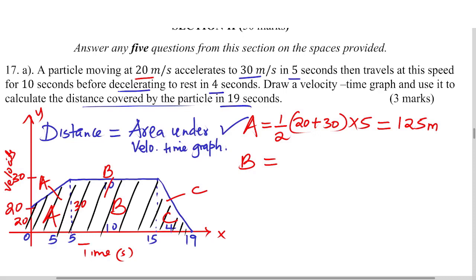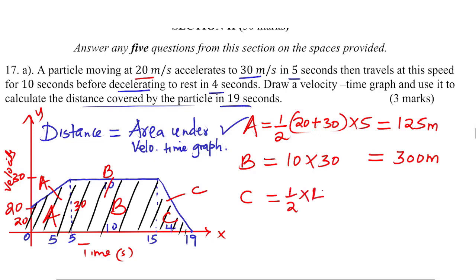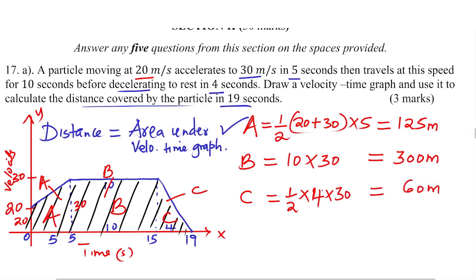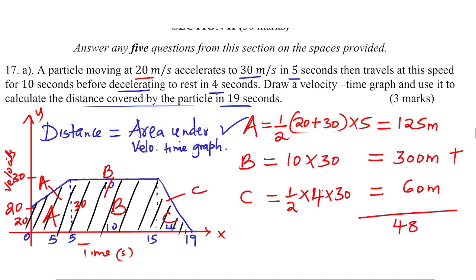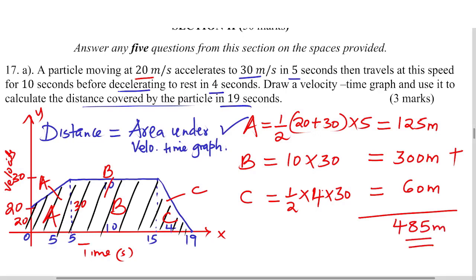Shape B is a rectangle measuring from 5 to 15, that is a width of 10, and the height is 30. So area B gives 300 meters. Shape C is a triangle. The area of a triangle is half times the base — the base from 15 to 19 is 4 — times the height, which is 30. So area C gives 60 meters. Adding the areas A plus B plus C gives the total distance covered by the particle in 19 seconds.